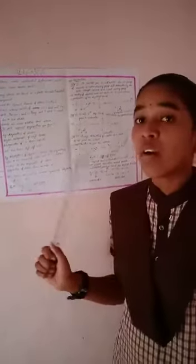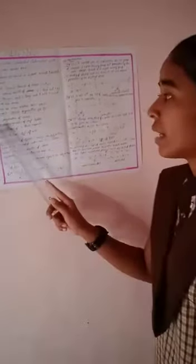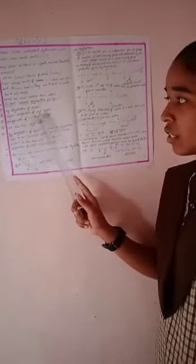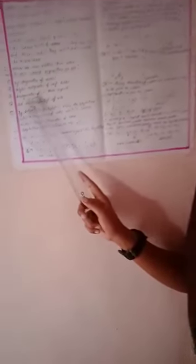Alkene preparation methods include: dehydration of alcohols, dehydrohalogenation of alkyl halides, and dehalogenation of 1,2-dihalocompounds.